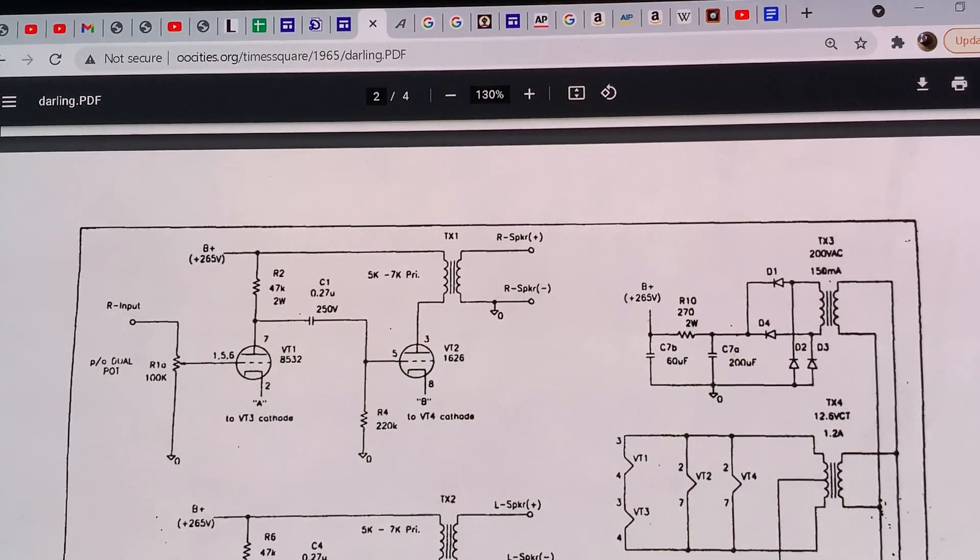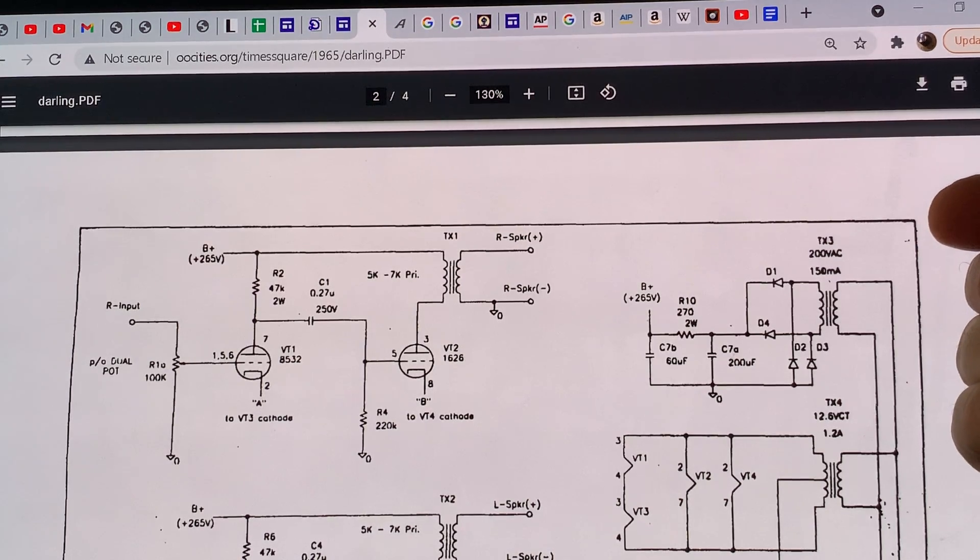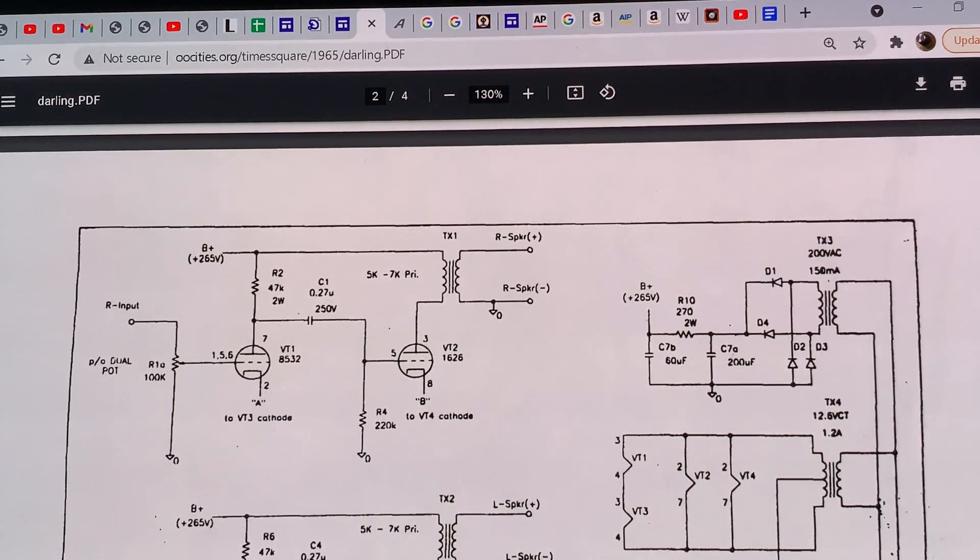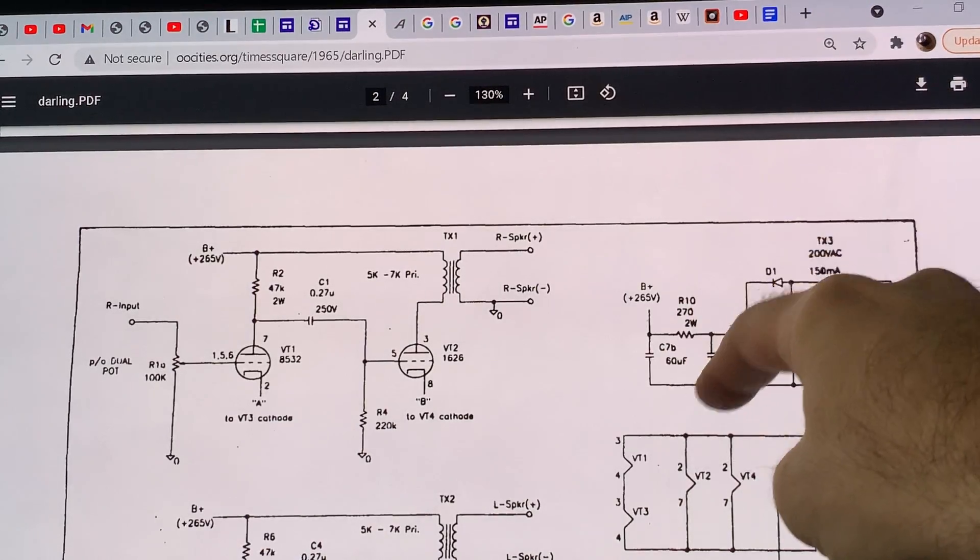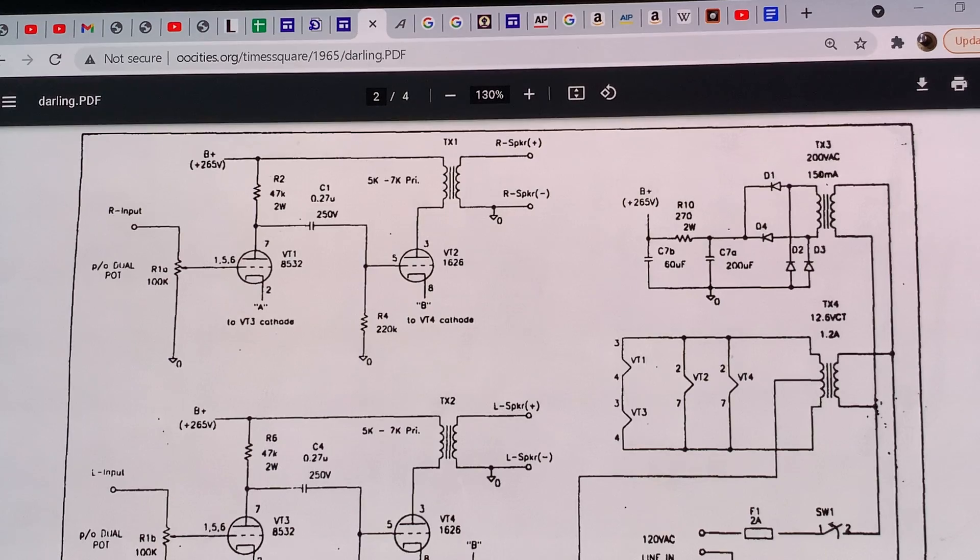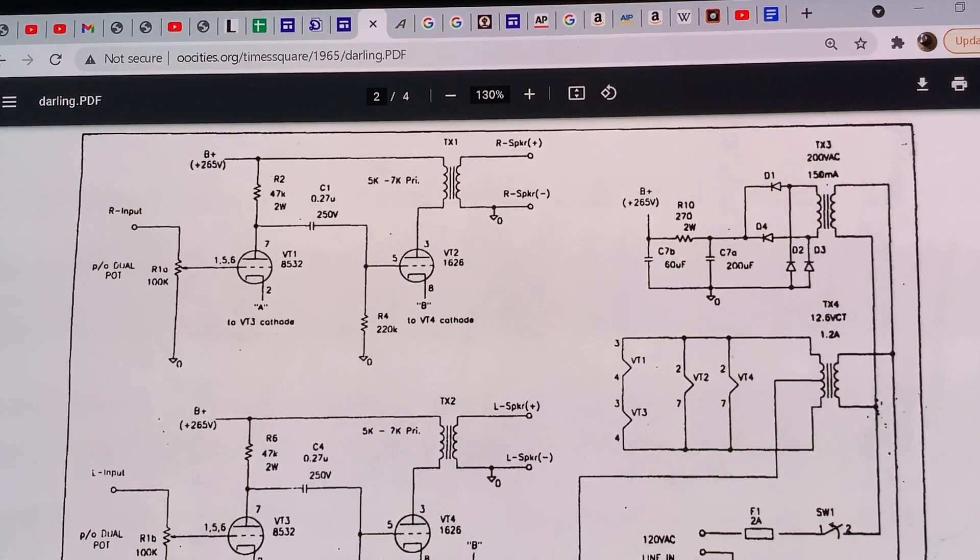If you want to build it deluxe, you can put a much bigger choke. But as I'm telling you, you can build this project on an extreme budget. But that doesn't mean it will sound like a transistor radio, maybe that you bought in the 60s in Russia or something. It will still sound like a really fantastic amplifier